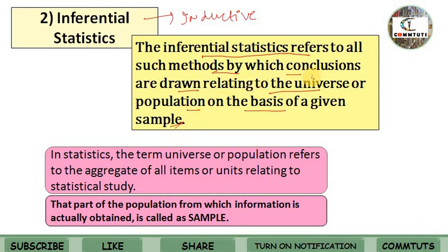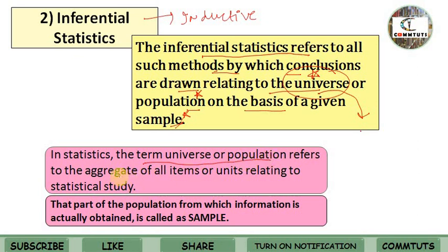We have encountered three new terms. First, what is the universe or population? In statistics, the term universe or population refers to the aggregate of all items and units relating to a statistical study. For example, if there are 50 students in your class, then all 50 students together form the universe or population.